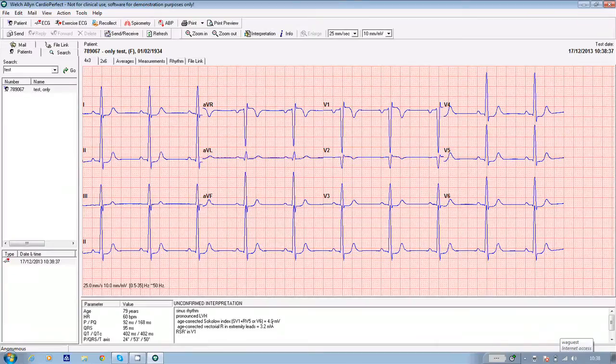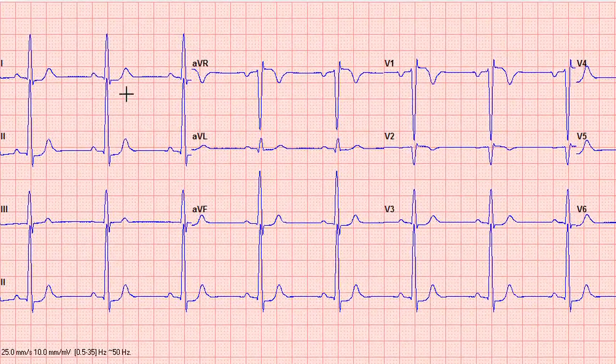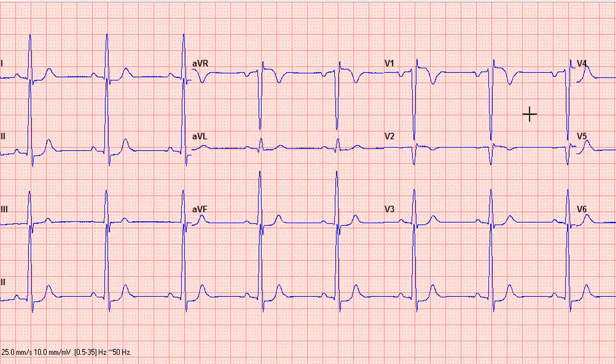After recording the ECG, the test is automatically saved to our software and a PDF copy of the test can be sent to your file output directory. And from there, it can be attached to the individual's patient record. The standard format of the ECG will be three lines with four leads on each. And at the bottom, a lead two rhythm strip.